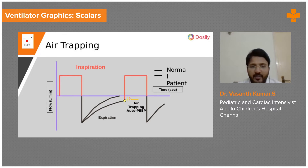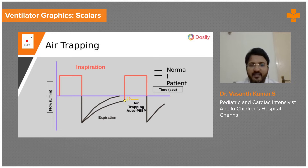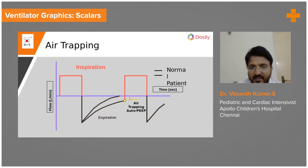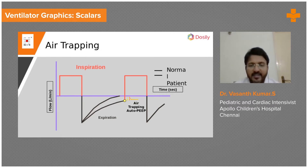Here you can see the inspiratory flow is a square waveform. The normal expiration should reach baseline here, but the expiration is taking longer to reach baseline before the next breath starts — this means there is a problem with expiration. This can be seen in conditions like asthma with bronchial obstruction or COPD where expiratory airflow is limited. You can see scooping here, and there is auto-PEEP — extra pressure generated because air is still remaining in the alveoli at end expiration. This air trapping at end expiration is called auto-PEEP.